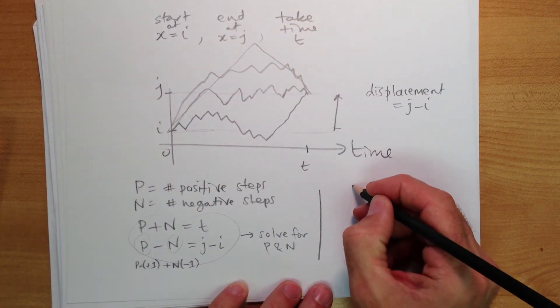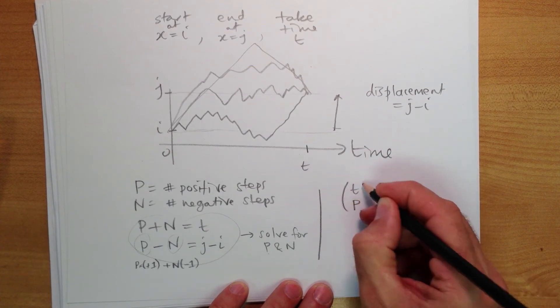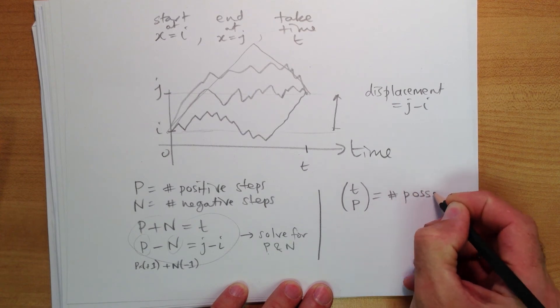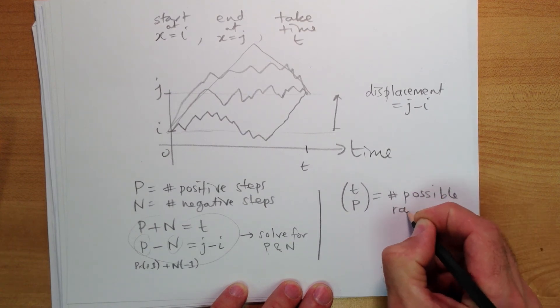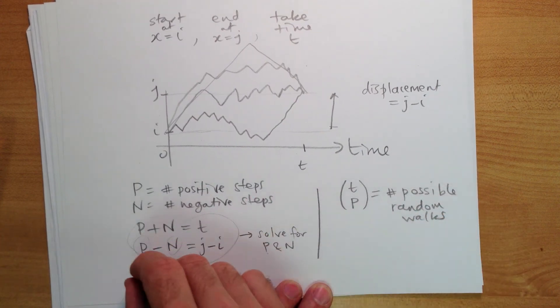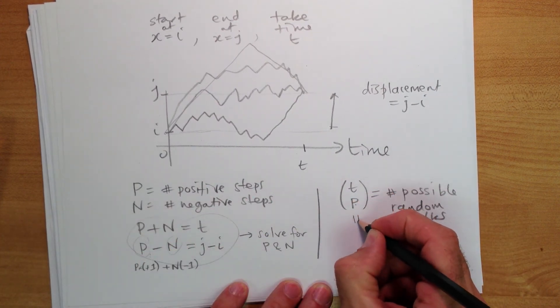So it becomes t choose p equals the number of possible random walks. Figure this out, put it in here.